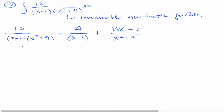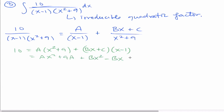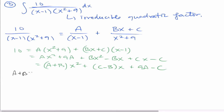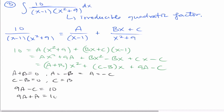We clear the denominators by multiplying by the lowest common denominator. The left-hand side is 10; the right-hand side is a times x squared plus 9, plus bx plus c, all times x minus 1. Distributing, we get ax squared plus 9a plus bx squared minus bx plus cx minus c. Collecting terms: a plus b times x squared, plus c minus b times x, plus 9a minus c. This tells me a plus b equals 0, so a is the opposite of b. There's no linear term either, so c minus b equals 0, meaning c equals b. Thus a equals negative c as well. And 9a minus c equals 10, the same as 9a plus a equals 10, giving a equals 1. Substituting back, b equals negative 1 and c equals negative 1.